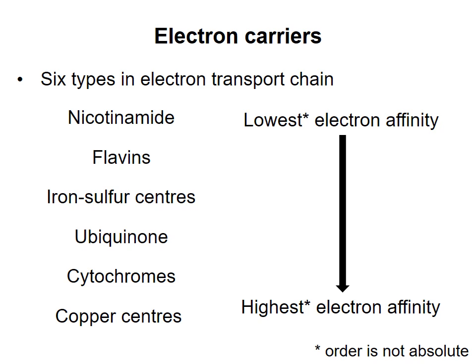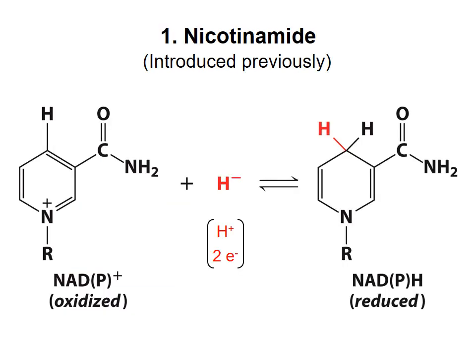I will briefly describe the six electron carriers in order. We've already seen the nicotinamide group, which is the electron-carrying group of NADH and NADPH. Remember that it carries two electrons in the nicotinamide ring. NADH and NADPH are not normally prosthetic groups, but bind transiently to proteins as co-substrates.